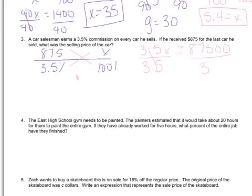And so when I divide both sides by 3.5, I get that X, or the selling price of the car, was $25,000. So that's how much the car cost, and he got to keep $875 of that.